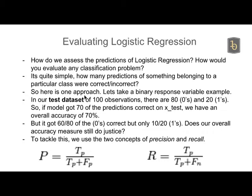Let's take a binary response variable example — default or not default. Tested on a set of 100 observations: actually there were 80 zeros (not default) and 20 defaults. My model predicted 70 out of 100 correctly, so my accuracy is 70 percent.